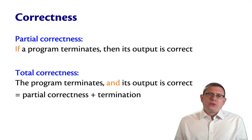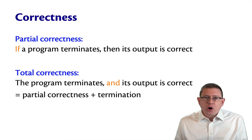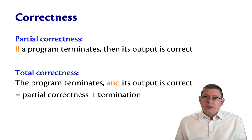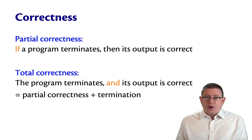What we've been talking about so far is really what's known as partial correctness. Partial correctness means that if a program terminates, then its output is correct.